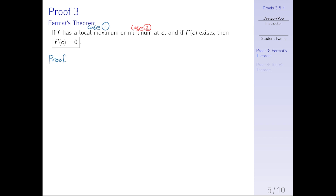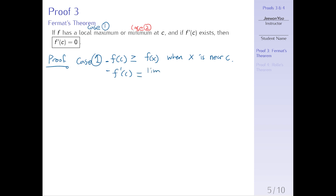Proof. We are considering case 1, which means we assume f(c) is greater than or equal to f(x) when x is near c — that is, f has a local maximum at c. Also, we assume that f'(c) exists, meaning f'(c) equals the limit as h approaches 0 of [f(c+h) minus f(c)] over h exists. To use this assumption, we need a number h approaching 0 — so let h be a small number close to 0.